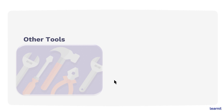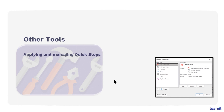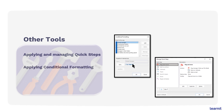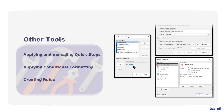Welcome back. Hopefully you had some fun with calendar blocking. Let's move on to segment three where we'll discuss three more tools to effectively strategize our day. The first tool is applying and managing quick steps. Quick steps has some really nice pre-built options that, with just a simple click of a button, can perform several tasks on a particular message. The second tool: conditional formatting — if you want to receive important messages with special font or color display, we can apply conditional formatting. And then finally, we'll talk about creating rules, which can be very simple or very complex.